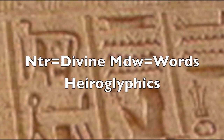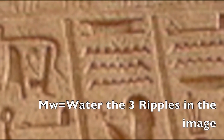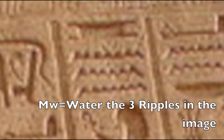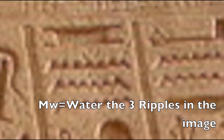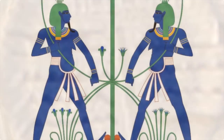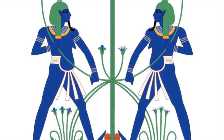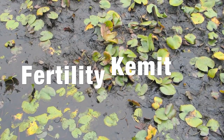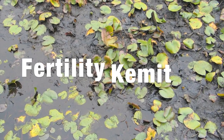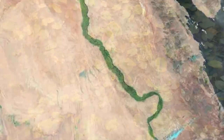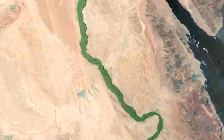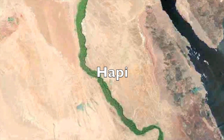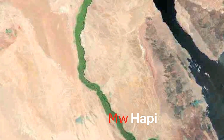The symbol of water in the Ndr-Medu, or hieroglyphics, is Mu, with the three ripple waves, or the letter N three times. Hapi is the force that runs through rivers to bring fertility to the lands of the desert. So when you combine the two terms — Mu and Hapi — you get the river waters.